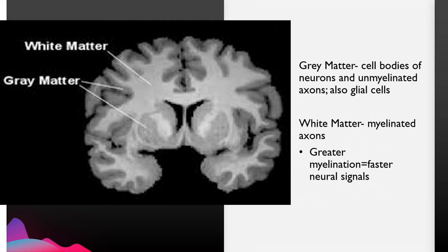Gray matter contains the cell bodies of neurons and unmyelinated axons — we looked at myelination yesterday. The gray matter also contains glial cells, which has been a common trick answer on our tests. The glial cells help function in structure and insulation of the neurons.